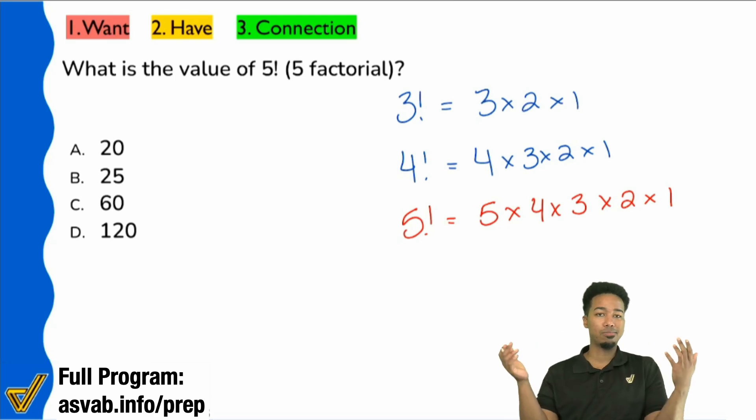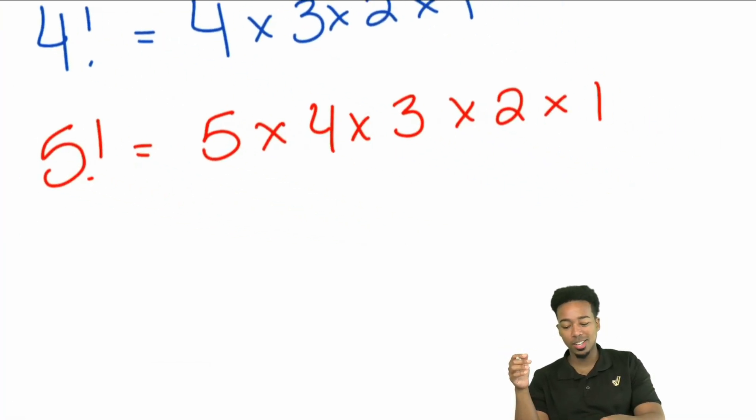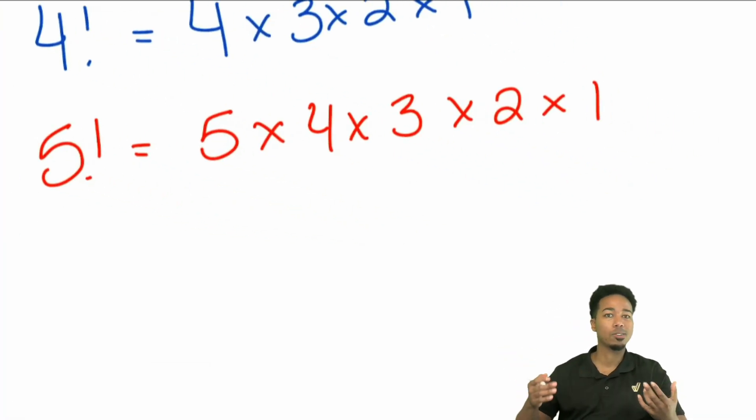And the one isn't really important at all, because if you're multiplying by one, it's just going to stay the same number. So we can really ignore the one and we can just start working backwards nice and easy.